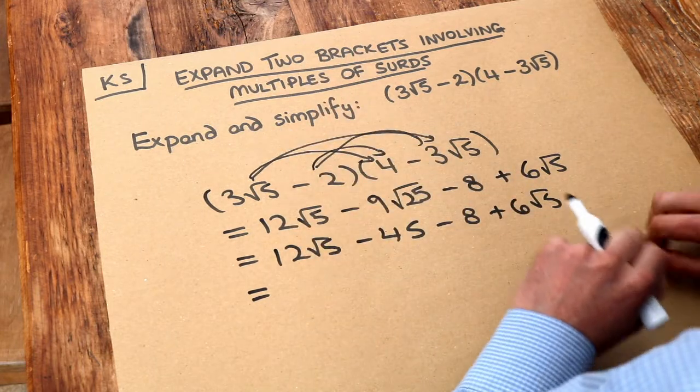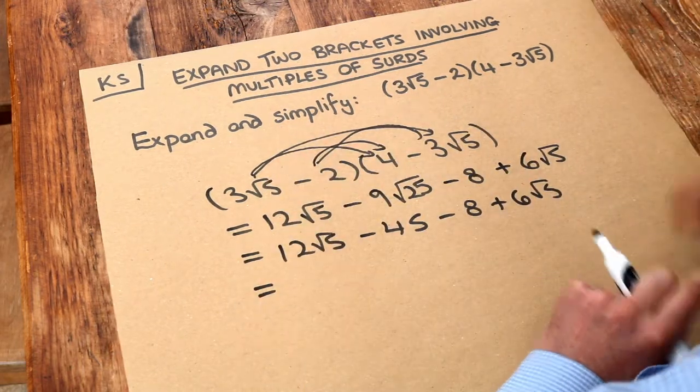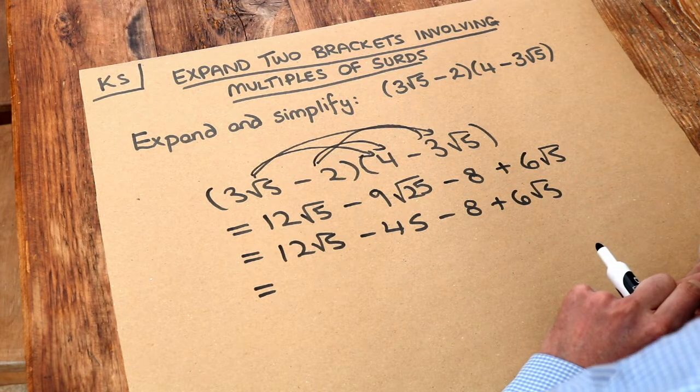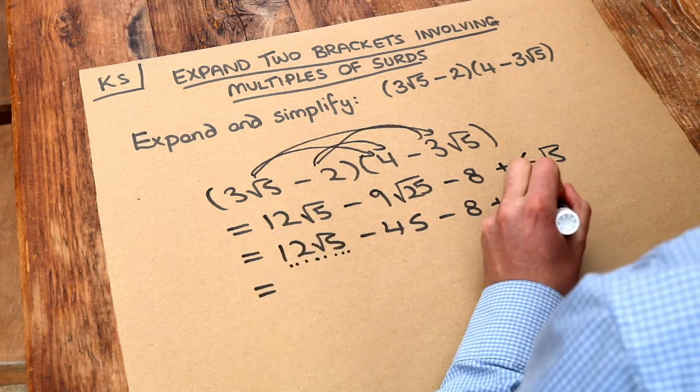And then we sort of collect like terms together, but instead of algebraic terms, we've got surds and non-surds. So let's collect the surds together first. This is a surd, this is a surd.